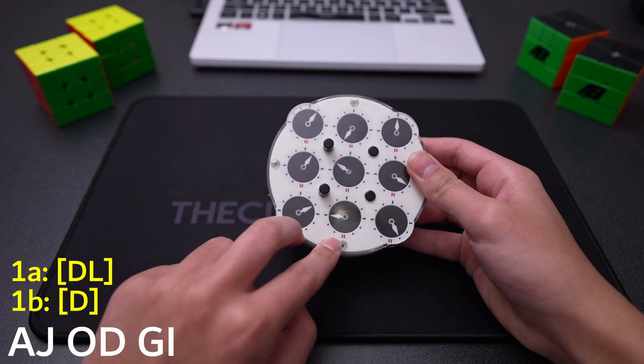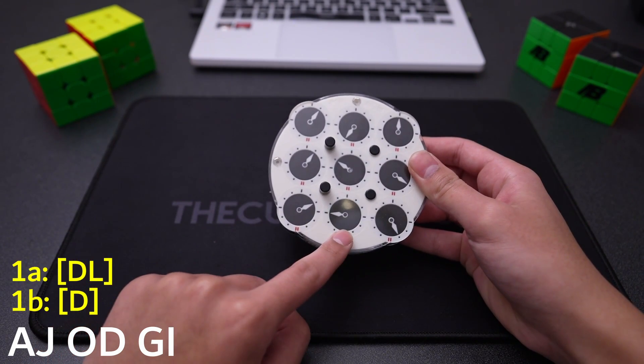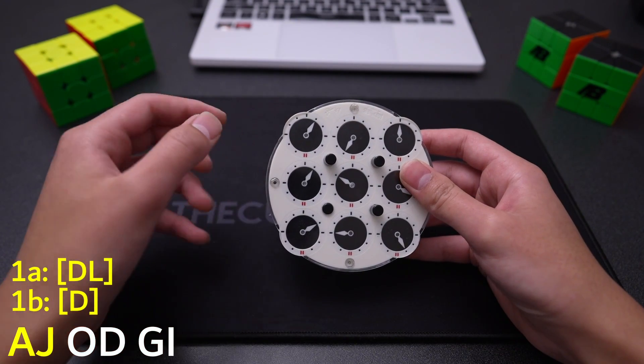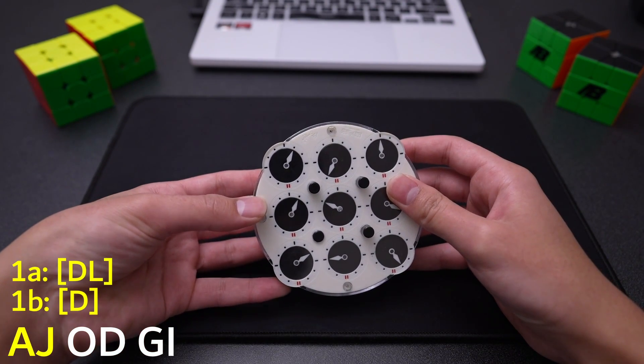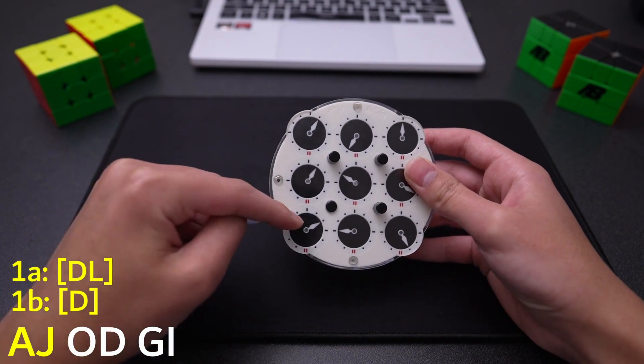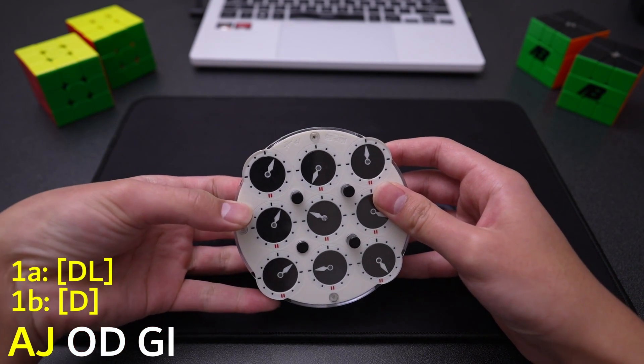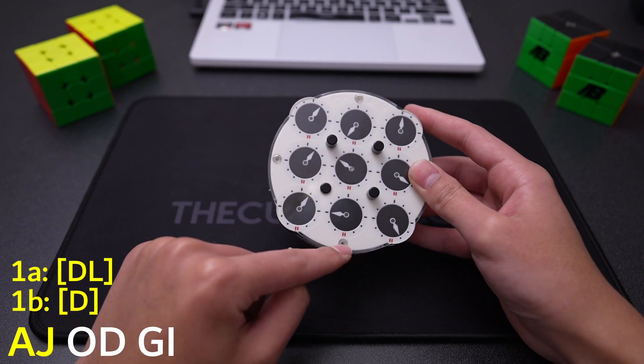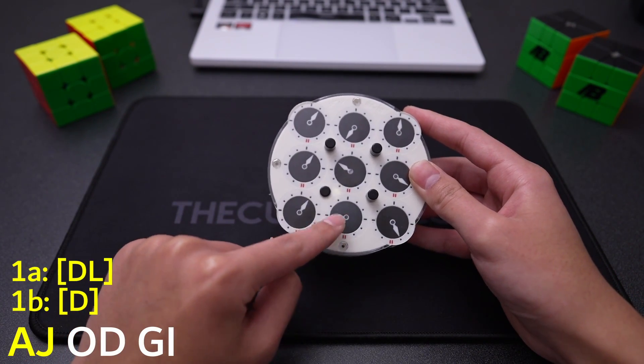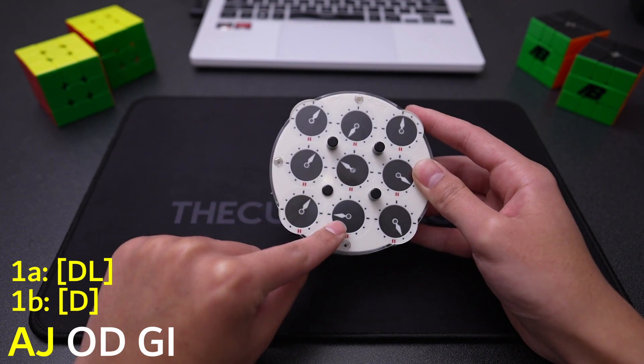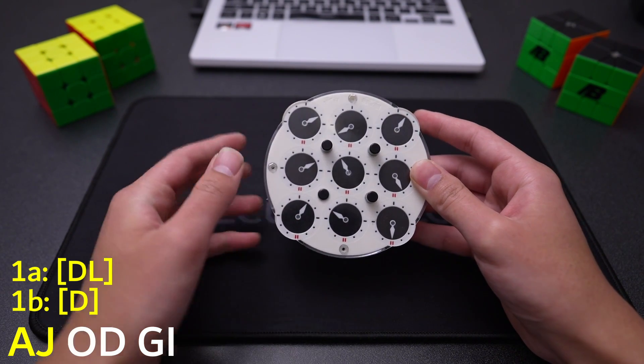We're going to start with the first two, which are DL and D for our reference clocks. When we see AJ, we're not going to do a 1 on our left hand. We're going to move our reference clock for our left hand to 1. For our second letter, we have J, and our reference clock for that is the D clock, and we're going to move that to the position negative 2 relative to the top.